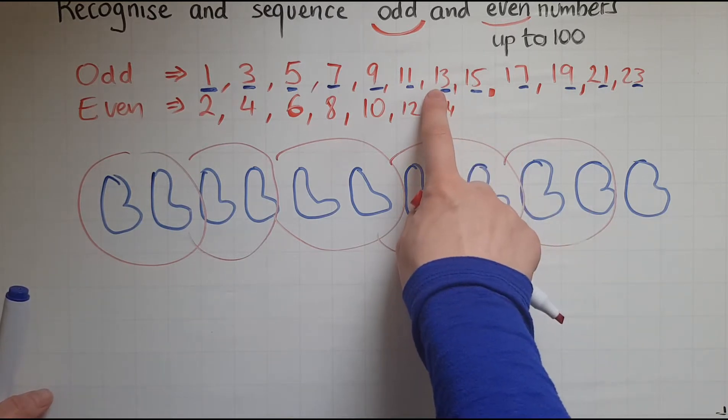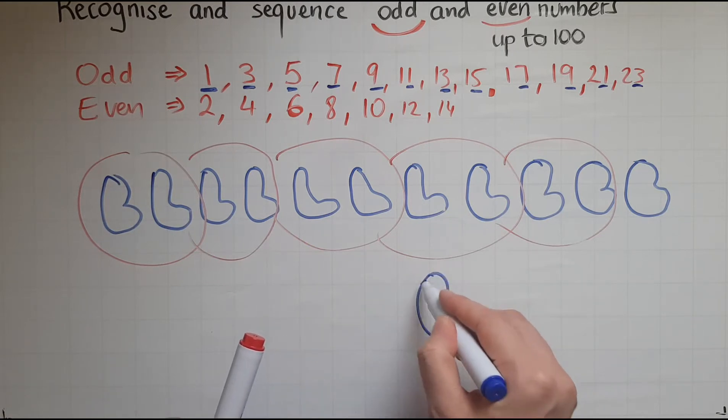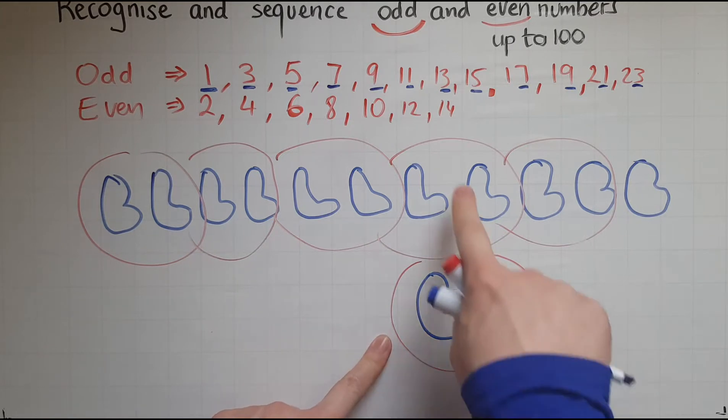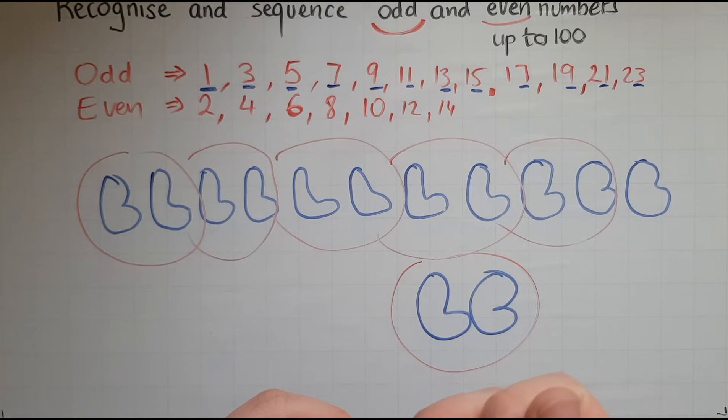Same thing would happen with 13. So with 12, you're going to make pairs. So there is an extra pair in comparison to 11. And that is just extra.